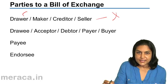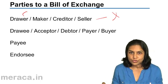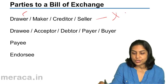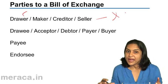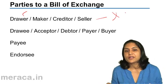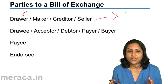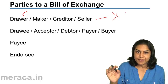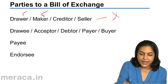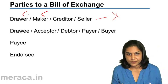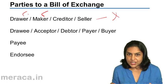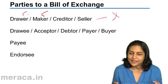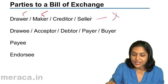In our example where X has sold goods to Y, X has drawn the bill of exchange. The person who draws is the drawer. X is the maker, he is the drawer of the bill of exchange. In a bill of exchange, it is the seller — the person who has to get the money — who makes the bill. That's why he is the seller.